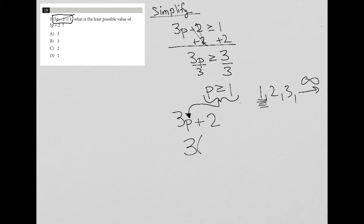So I'm going to say that p, its smallest value is positive one. And therefore, the smallest value of 3p plus 2 would be five. So my answer must be choice A.